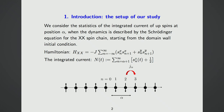The Hamiltonian of the quantum XX spin chain is written here. The quantity of interest—the integrated current—is equivalent to counting the number of up-spins from position alpha to the right, written in operator form. This is the model and the quantity we are interested in.